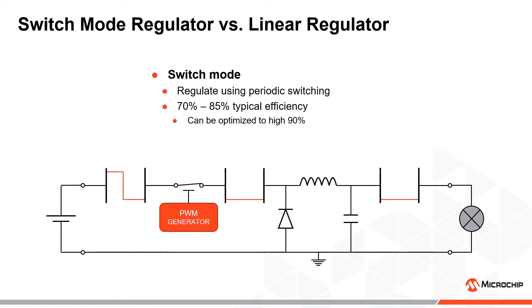A switch mode power supply relies on periodic switching to generate voltage pulses, which is then smoothed out using theoretically lossless components like inductors, capacitors and diodes. In an ideal case, switch mode power supplies have 100% efficiency.